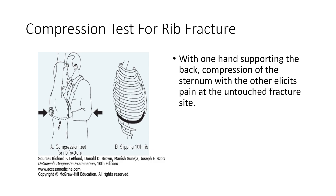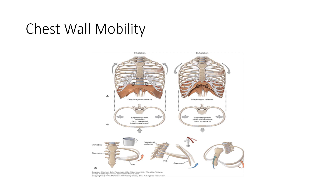When looking for rib fractures, a useful quick test is the compression test. You can have the patient with their arms at their side and apply compression from side to side — anterior to posterior, or sternal to spinal articulations. If there is a fracture present, pressing on the sternum will mobilize that fracture and cause pain. This can be useful for assessing a fracture without having to press directly on the rib cage itself.